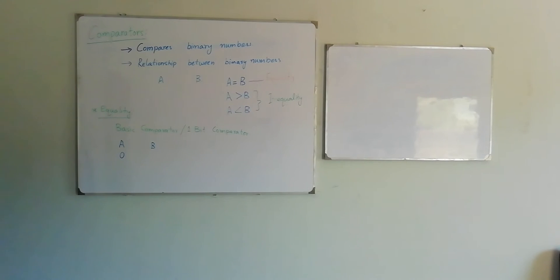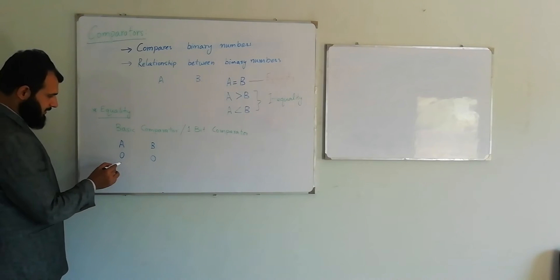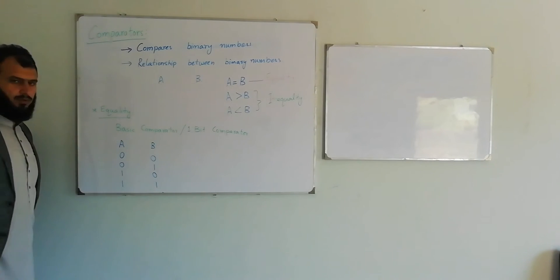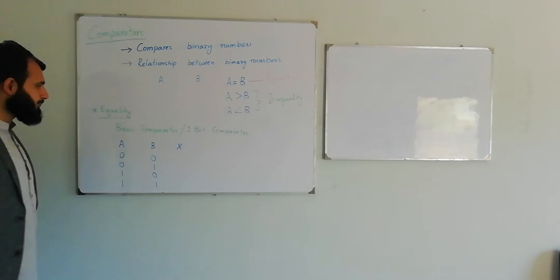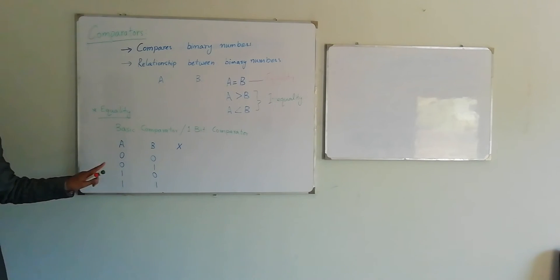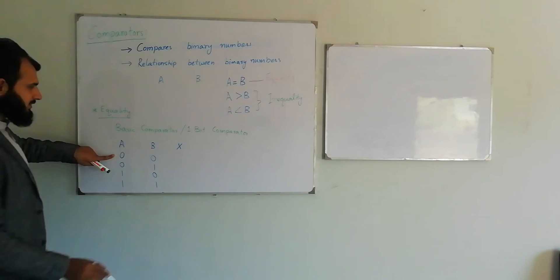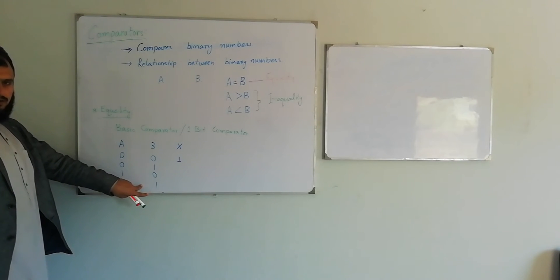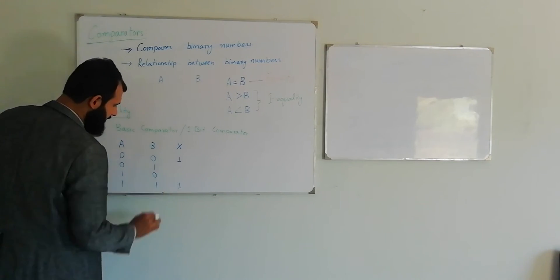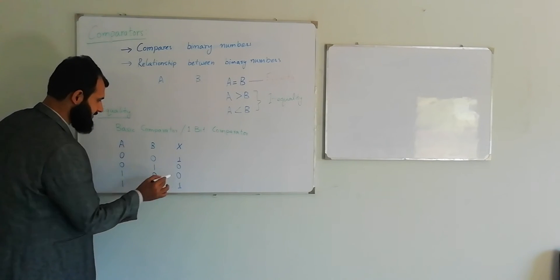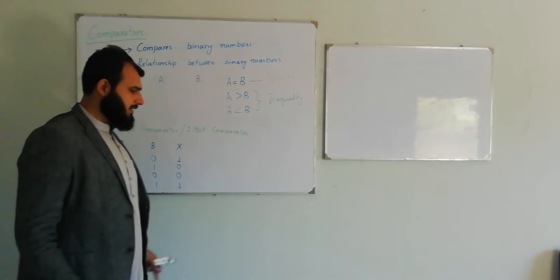The different values of bit A and bit B are: A=0, B=0; A=0, B=1; A=1, B=0; and A=1, B=1. We need a sub-circuit which gives a high output when these two bits are equal. When A=0 and B=0, the output must be 1. Similarly, when A=1 and B=1, both bits are equal, so the output must also be 1. In all other cases, the output must be 0.